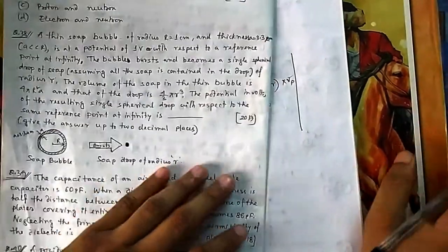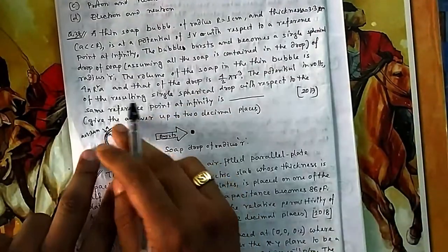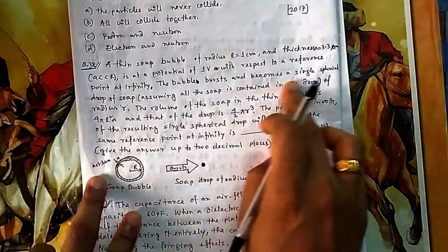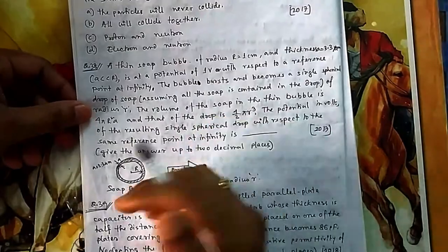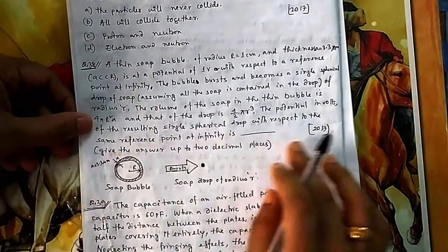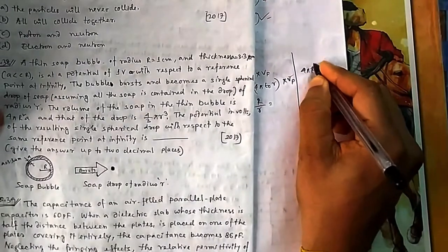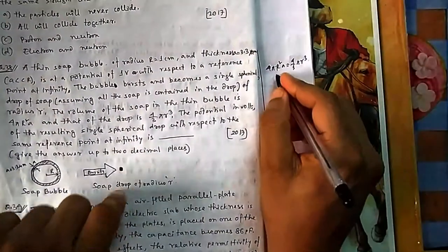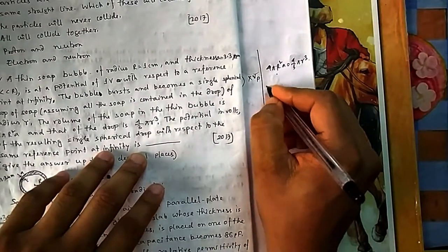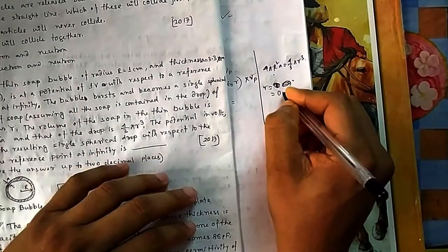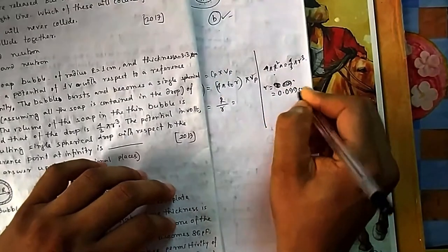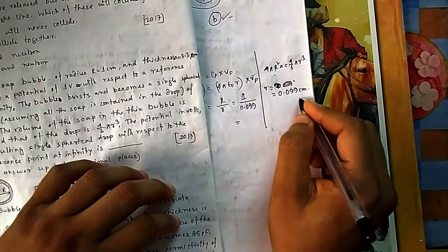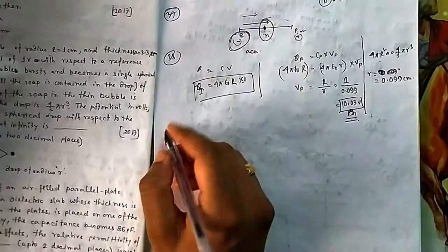To find R/r, use volume conservation. The volume of soap in the thin bubble is 4πR²a (where a is thickness), and this equals the volume of the spherical drop: (4/3)πr³. With capital R = 1 cm and a = 3.3 micrometers given, solving for small r gives approximately 0.099 centimeters. Substituting back, V_final = R/r = 1 cm / 0.099 cm, which gives approximately 10.03 volts.